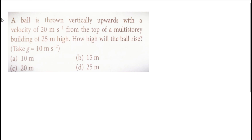So that is an easy problem. Next, the final problem in the kinematics series — equations of motion. A ball is thrown vertically upward with a velocity of 20 ms minus 1 from the top of a multi-story building 25 meters high. How high will the ball rise?